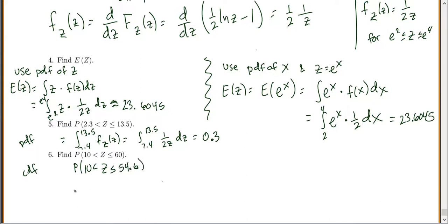So we look at our CDF, this probability is just equal to the CDF, and you put the big number in first, so 54.6 minus the CDF at 10. And let's make sure we put a z in here to remind ourselves that we are talking about the CDF of z.